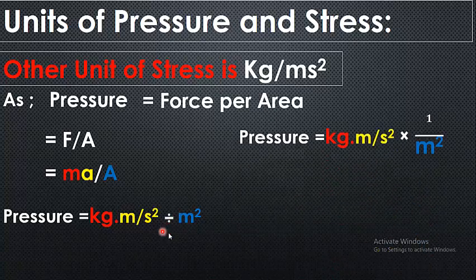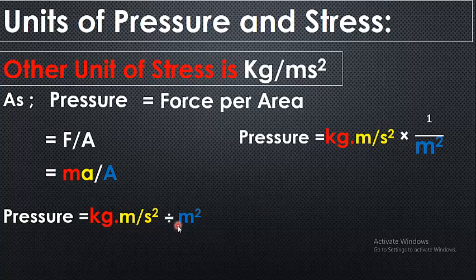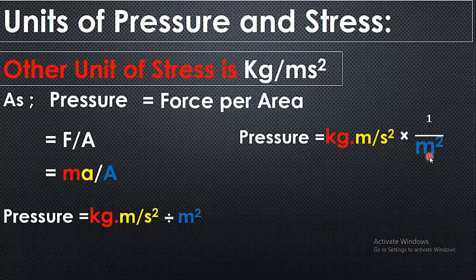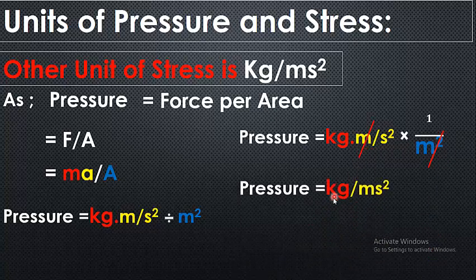This is the rule of mathematics: when we convert the division sign into multiplication, the value will be written in the form of the denominator. The square meter goes into the denominator and the division sign is converted into a multiplication sign. So 1 meter is here and 1 square meter is here. By cancelling out this square with this meter, we will be left with kg per meter second square.